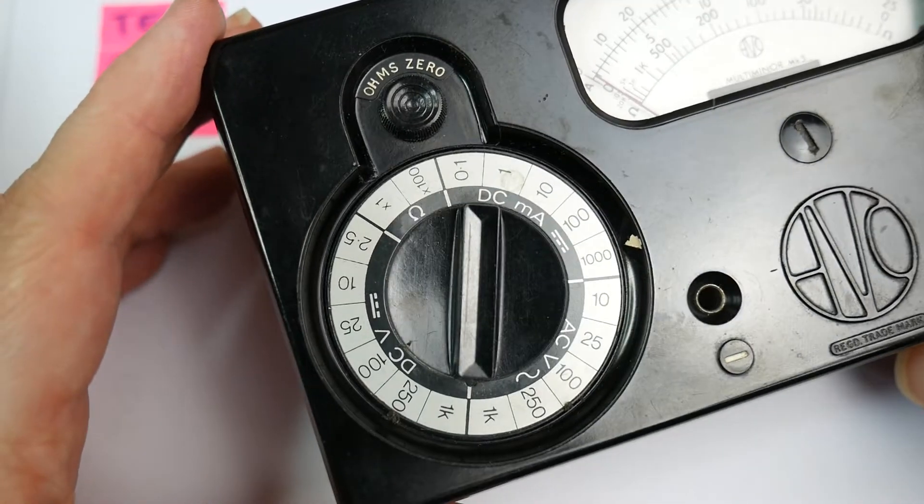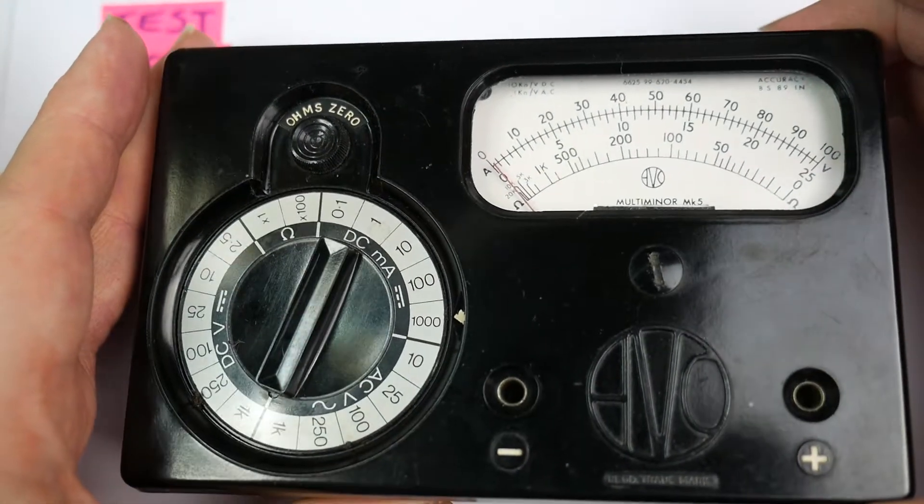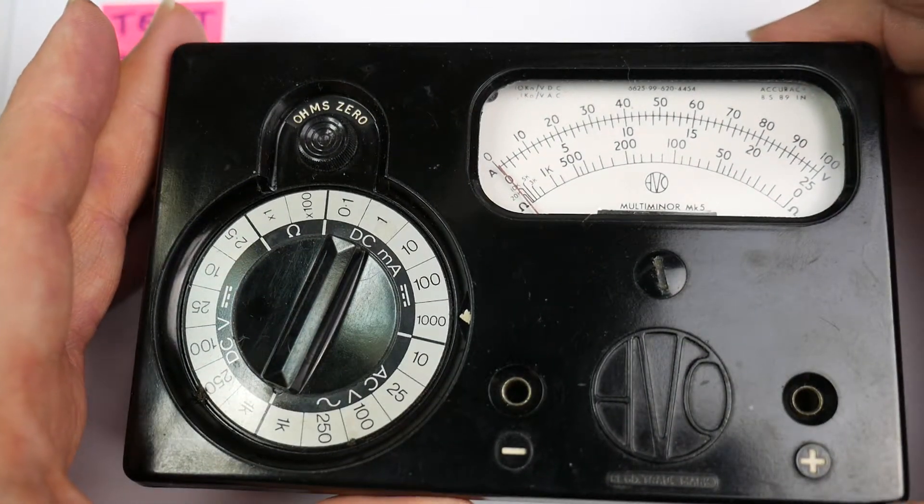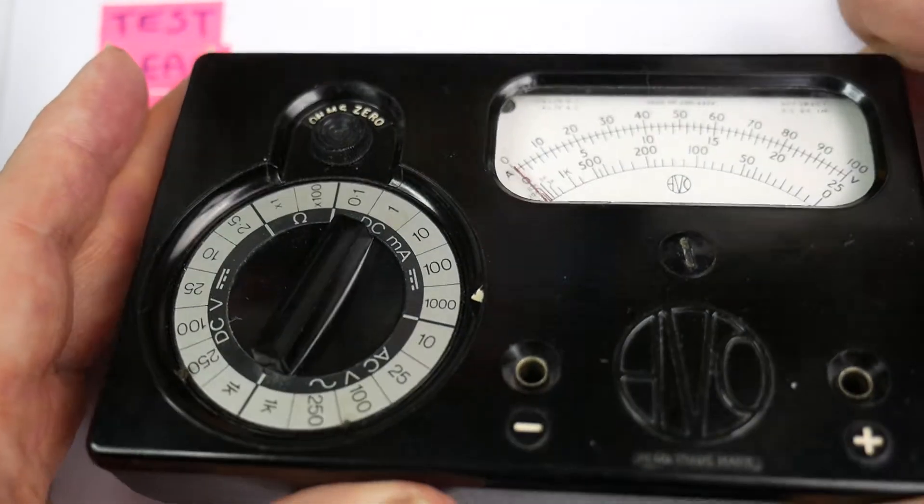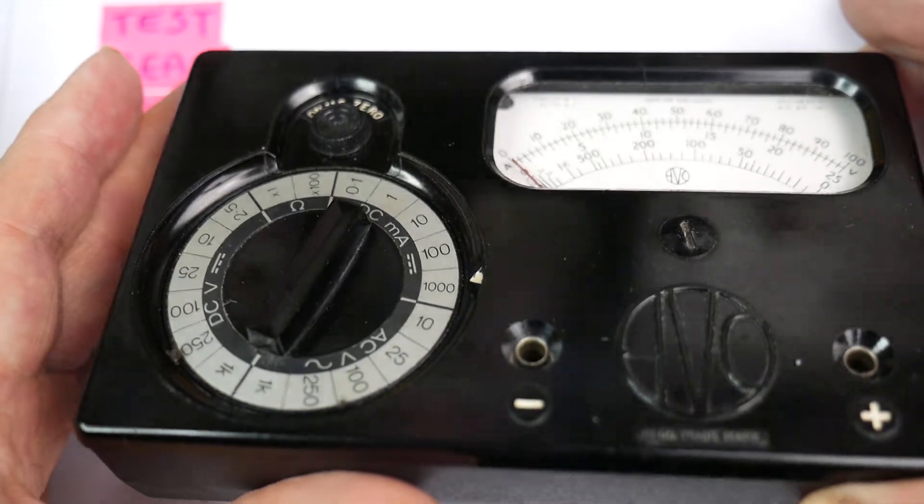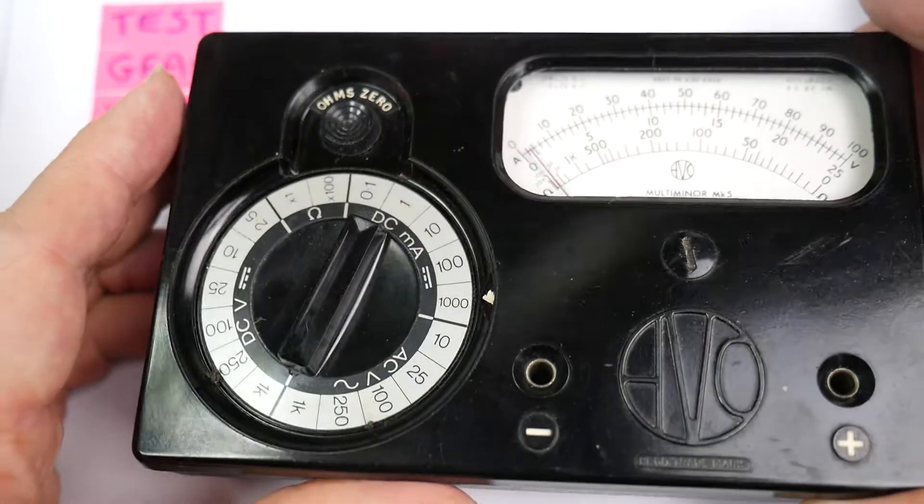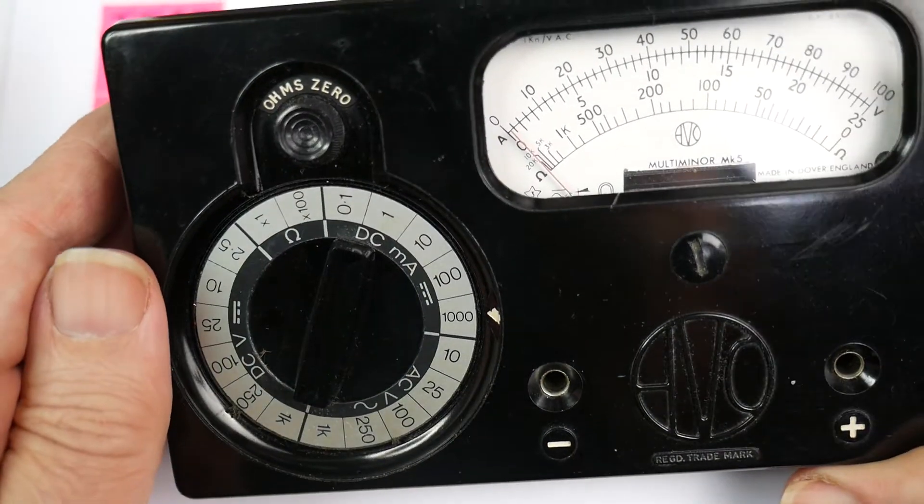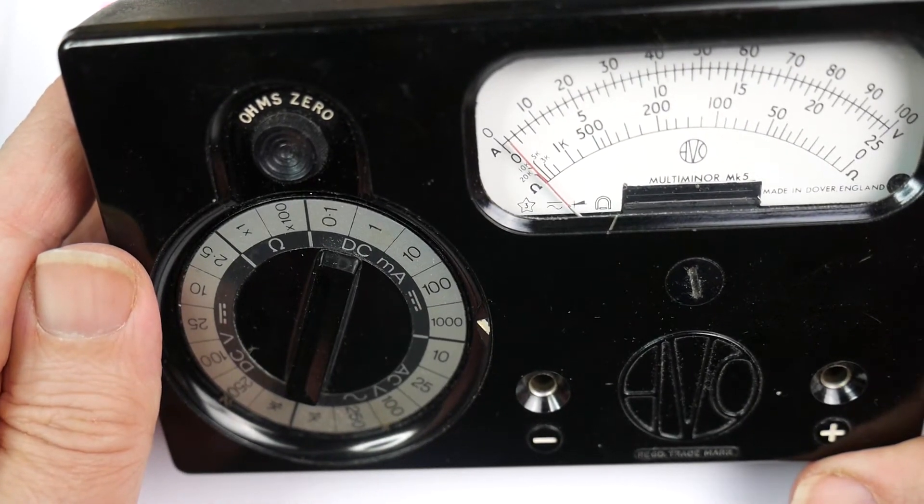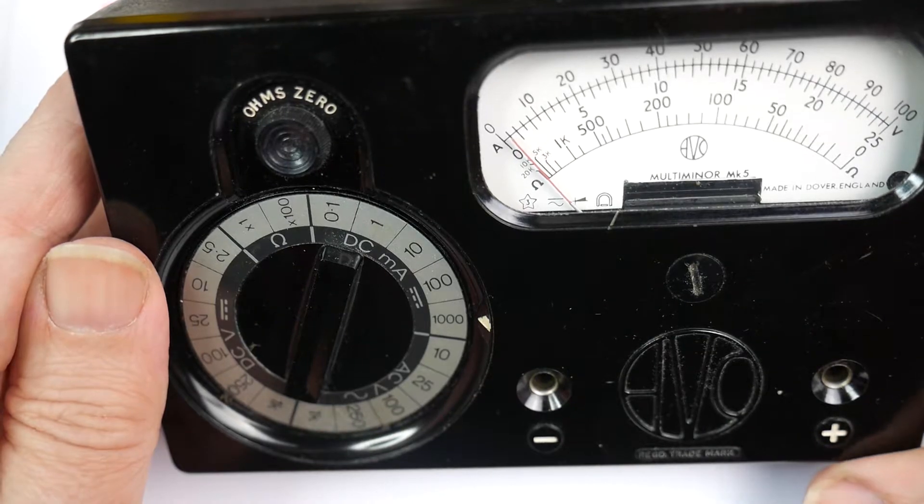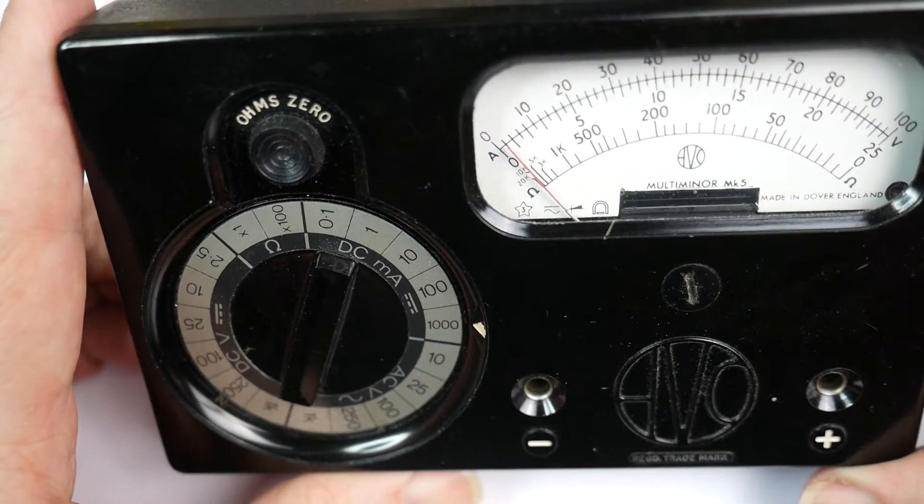With this lovely black Bakelite case, what's it like inside? Is it going to be like the Model 8, all brass and Bakelite in there, or is it a little bit more modern with a PCB and modern looking components? This is actually an Evo Multi-Minor Mark 5, made in Dover, England.